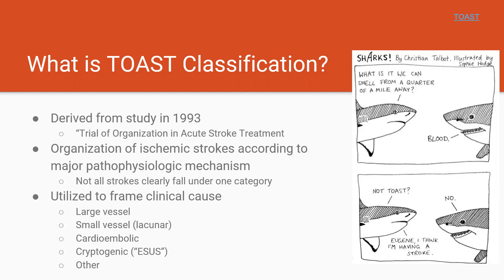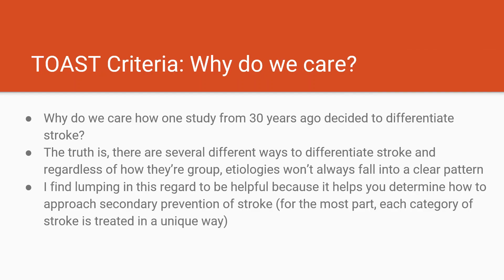So why do we really care about one trial that was made 30 years ago? There are dozens of different ways of dividing ischemic stroke into subtype, and regardless of how they're grouped, etiologies don't always fall into clear patterns. The main reason I like to divide ischemic stroke by TOAST classification is that it guides your approach to secondary prevention. For example, large vessel stroke is treated differently than cardioembolic stroke, which is treated differently than small vessel stroke — so lumping etiologies into larger groups makes secondary prevention a lot more approachable.